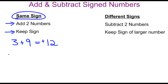If we wanted to add negative 4 plus negative 2, the signs are both negative, so we'll take the 4 and the 2 and add them together and that would give us 6. But the signs of both of these numbers are negative, so we bring the negative sign along and negative 4 plus negative 2 is negative 6.